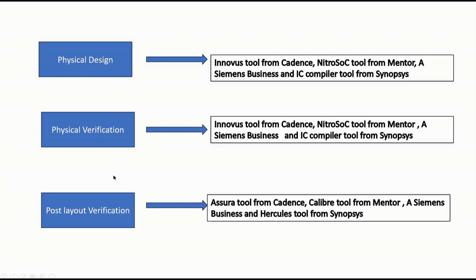For physical design flow, you can use Innovus from Cadence, Nitro/Associate tool from Mentor, and IC Compiler from Synopsys. For physical verification, Innovus and Calibre can be used. For post-layout verification, you can use Tempus/StarRC from Cadence, Calibre from Mentor, and HSpice or equivalent tool from Synopsys.